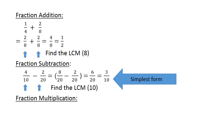Fraction multiplication: 1 over 4 times 1 over 8. Multiply the numerators: 1 times 1 equals 1. Multiply the denominators: 4 times 8 equals 32. So the answer is 1 over 32.